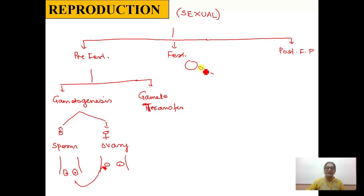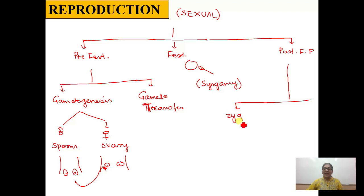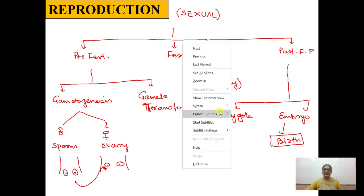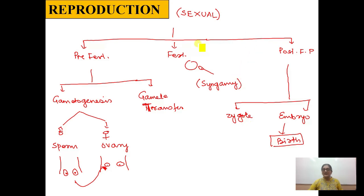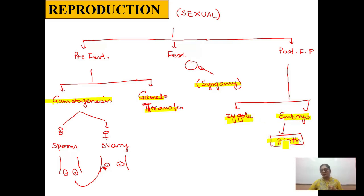The male and female gametes fuse with each other — this process is called fertilization, also known as syngamy. Once fertilization occurs, first a zygote is formed, and this zygote divides to form a multicellular embryo. Later, the birth of this embryo takes place — the child is born and takes its unique identity. Only then is sexual reproduction considered complete.